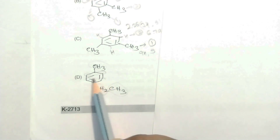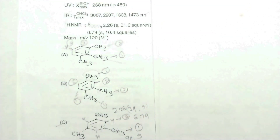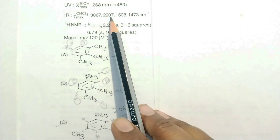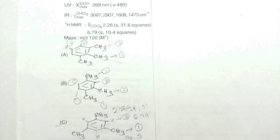Checking option D: the different environments give one, two, three, four, and five signals — five signals total, but the data requires only two signals, both singlets. Hence option C is confirmed correct. The IR data supports this: 3069 cm⁻¹ is sp2 C-H, 2907 cm⁻¹ is sp3 C-H, and 1608 and 1473 cm⁻¹ are aromatic C=C vibrations.